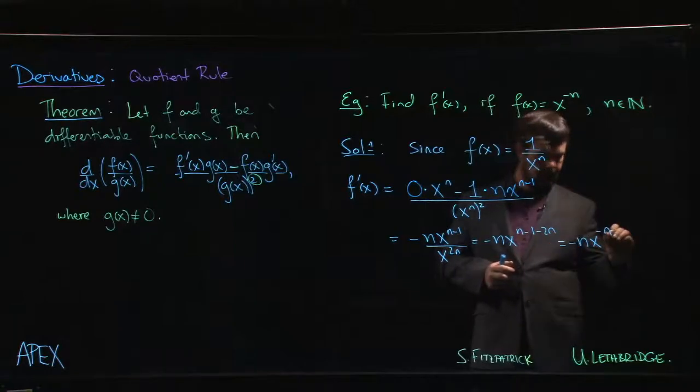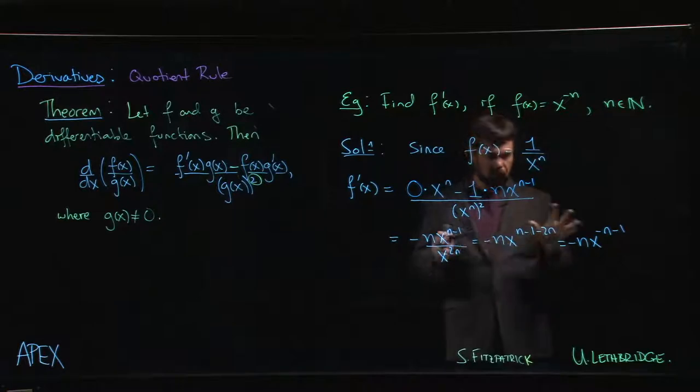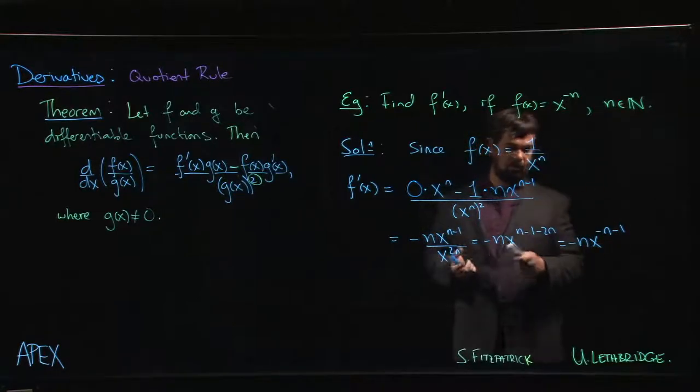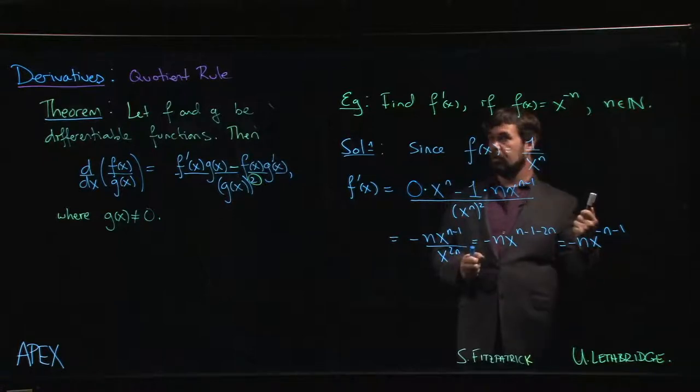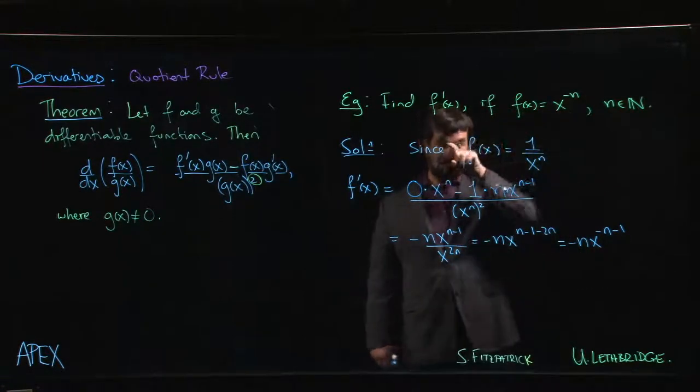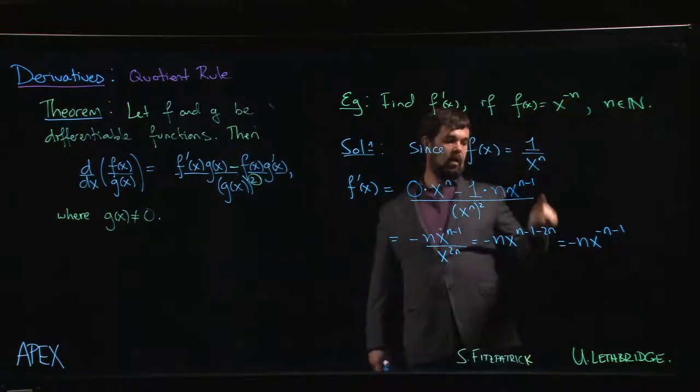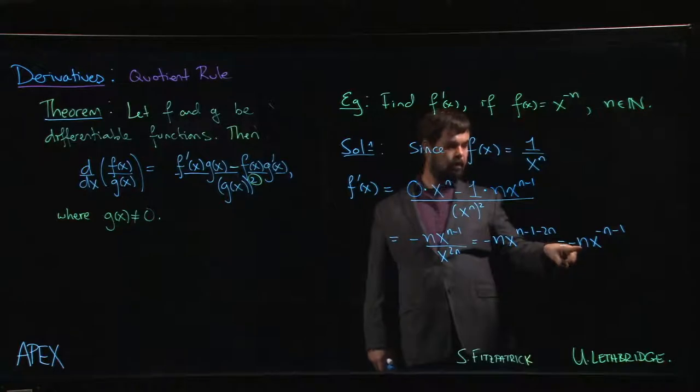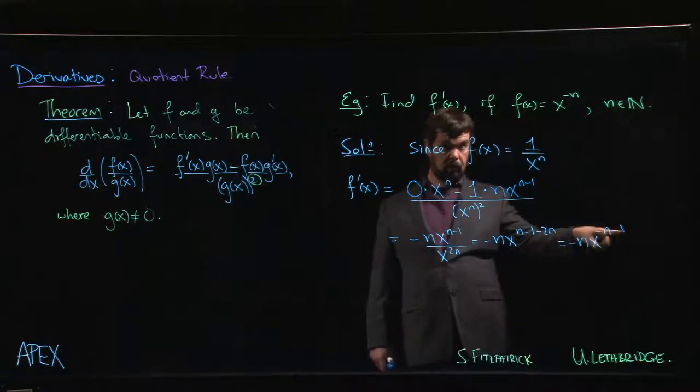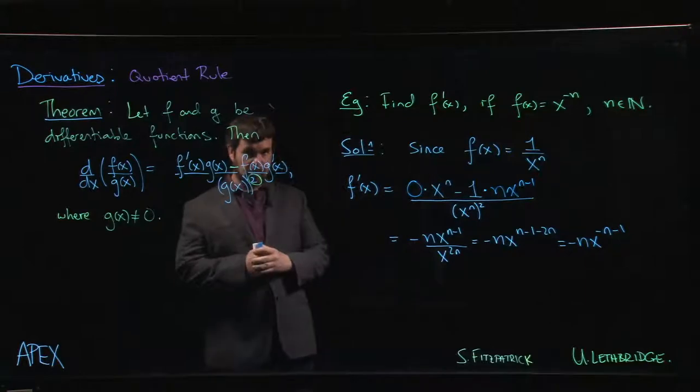Keep in mind here that n was a positive integer, so minus n is a negative integer. Here's our result, and what does our result say? Our result says that if you're taking the derivative of a power function where the power is negative, the exponent comes down in front, minus n, and then we subtract one from the exponent. But that was exactly the power rule that we had before for positive integers.